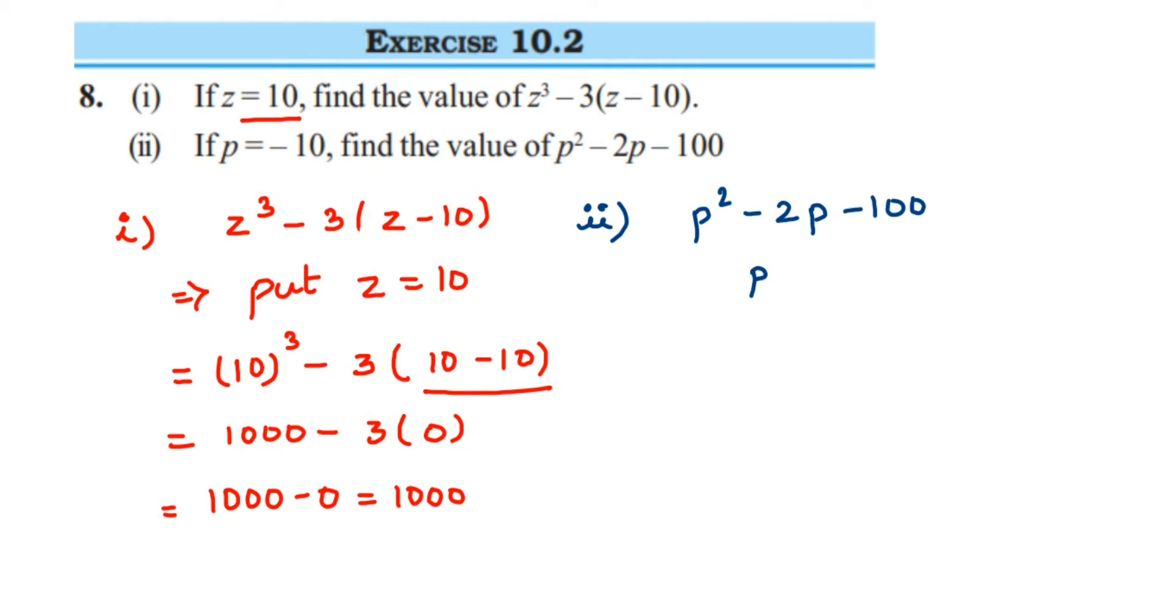So put p is equal to minus 10. This will become minus 10 square minus 2 into minus 10 and then minus 100. So minus 10 square is nothing but minus 10 into minus 10. 10 tens is 100, and minus into minus will become plus. So we will get here 100.